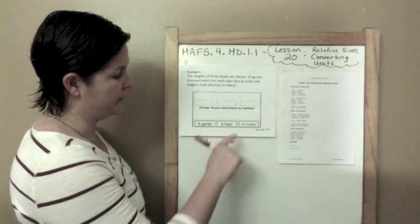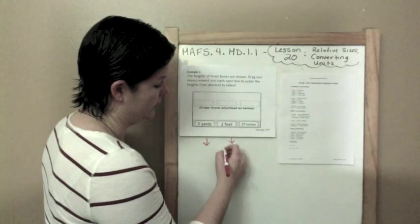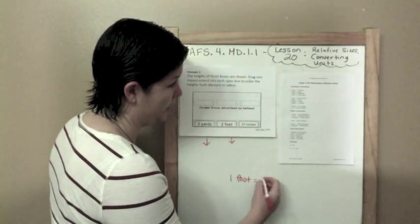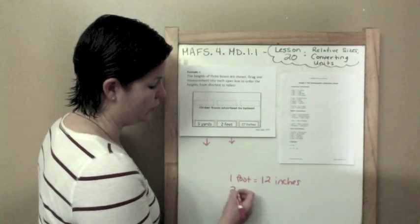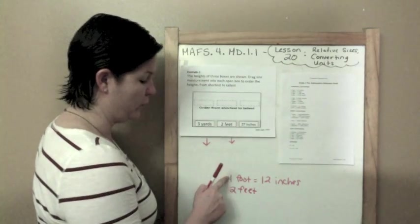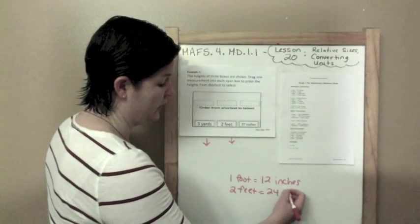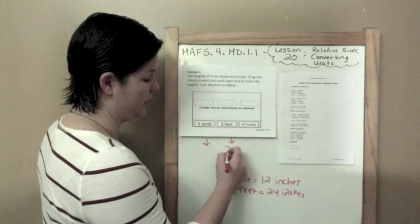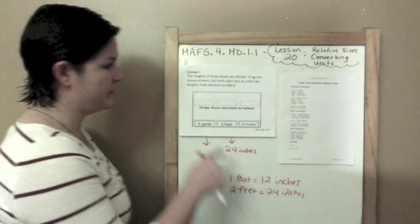So over here I see that 1 foot equals 12 inches. So 2 feet, not foot, 2 feet. 1 times 2 is 2, so 12 times 2 would be 24 inches. So my 2 feet would be 24 inches. I know that this is 27 inches. Okay, now over to yards.